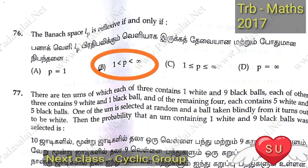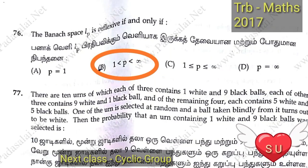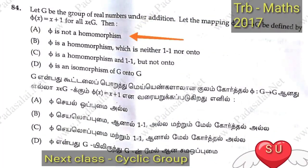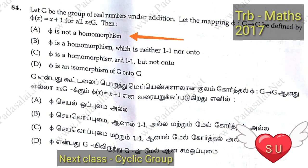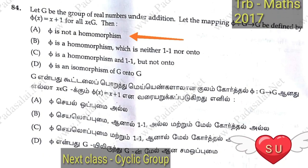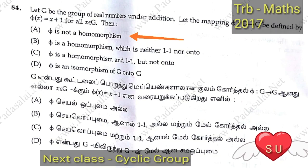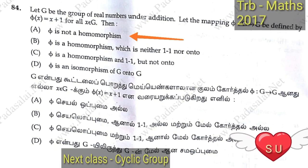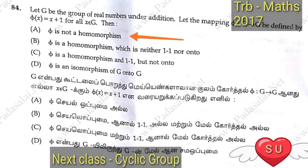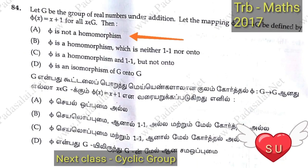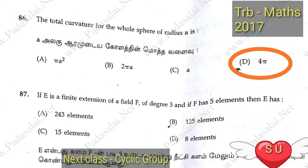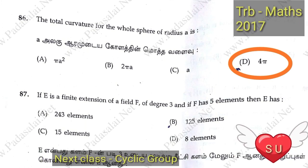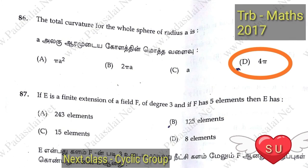A relation is reflexive if and only if 1 is less than or equal to p less than or equal to lambda — okay, it's infinity. Next question: if G is a group of real numbers under addition and the mapping pi: G to G is defined by pi of x equals x plus one for all x belonging to G, then the mapping is not a homomorphism.